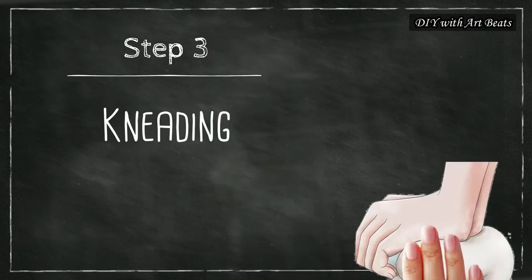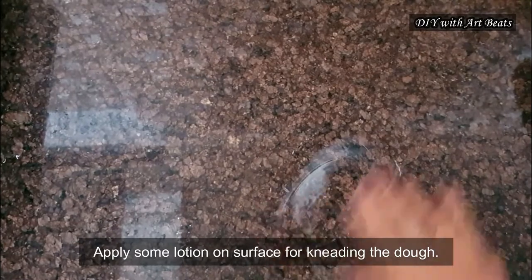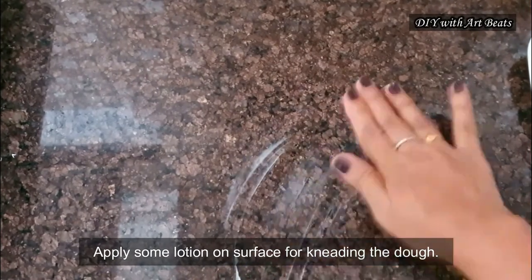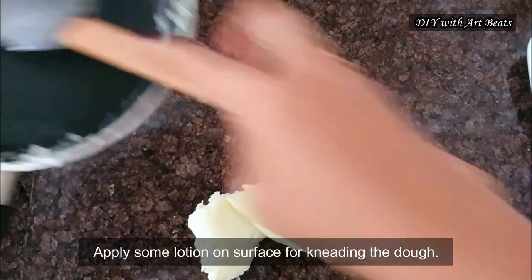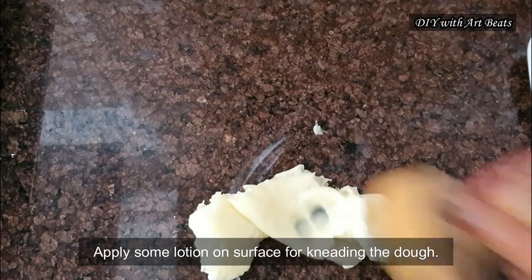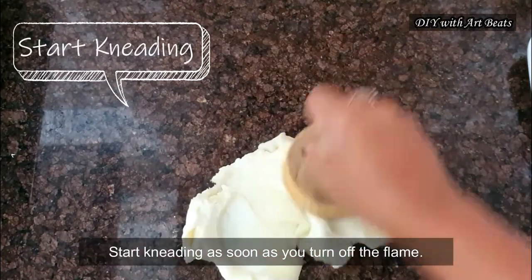Next step is kneading the clay. When you turn off the flame, quickly apply some lotion on the surface and start kneading the dough as soon as you take it out of the pan even if it's hot. So be careful while kneading the dough.